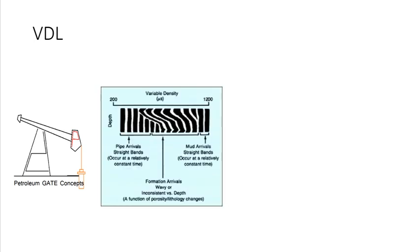The signal which passed directly through the casing shows up as parallel straight lines to the left of the VDL plot.